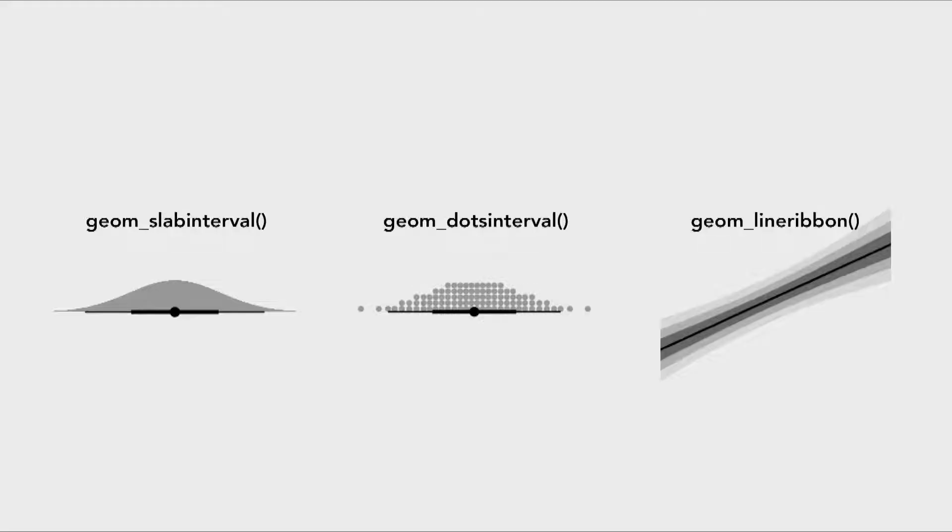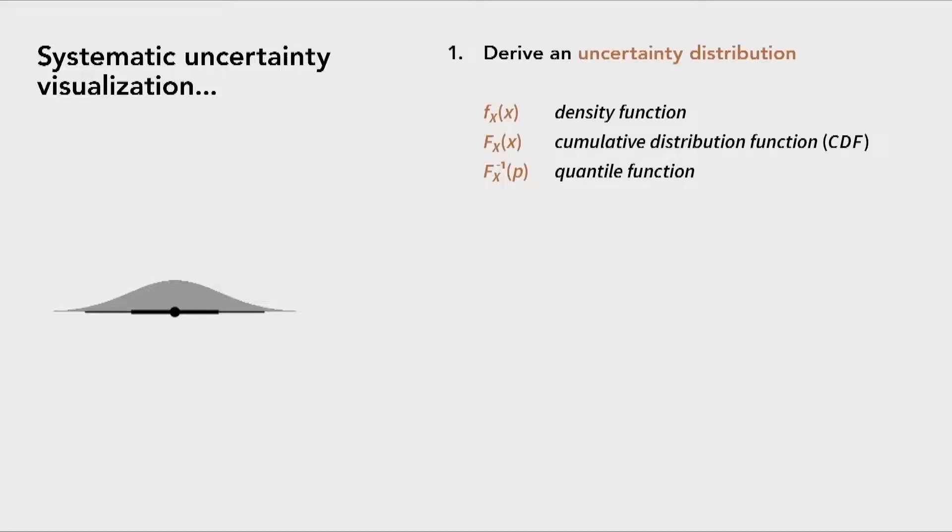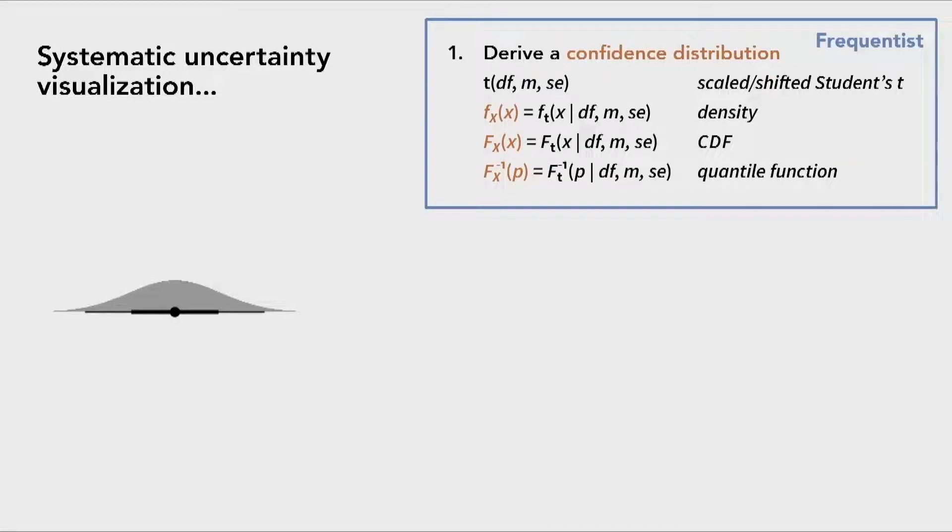ggdist is an R package that extends ggplot2 to provide three additional geometries. Each of these is a composite geometry that uses the same underlying framework. To understand how to use these, it's really helpful to step back and think about how to construct uncertainty visualizations systematically. The idea behind ggdist is that first you would derive an uncertainty distribution, and I don't really care if you're a Bayesian or a frequentist. It doesn't really matter.